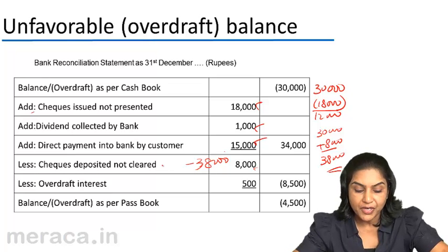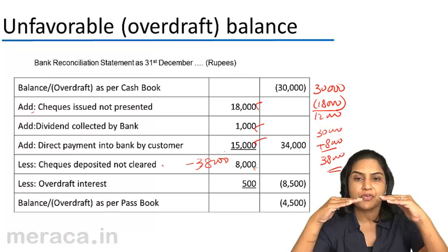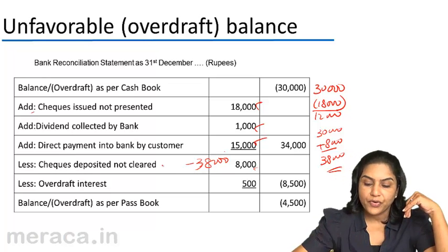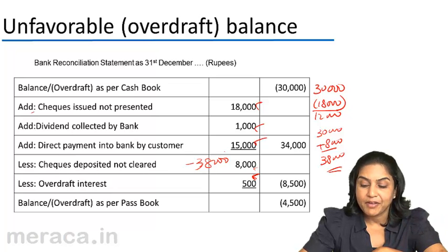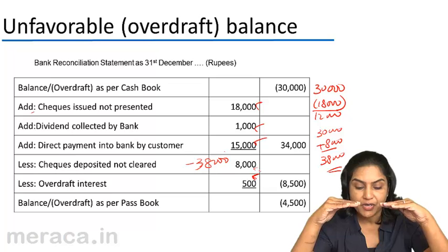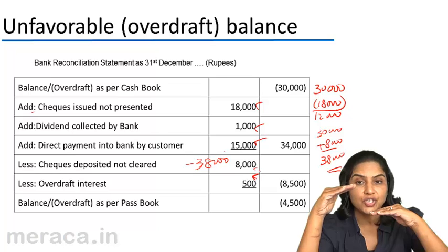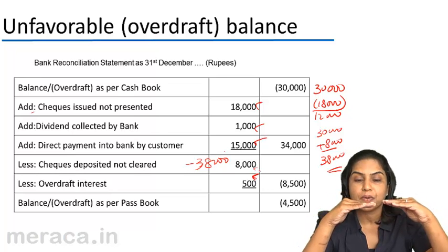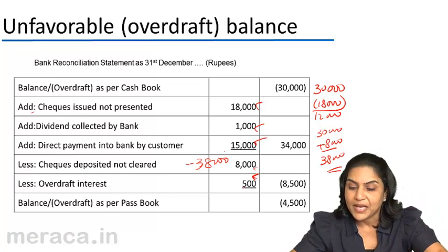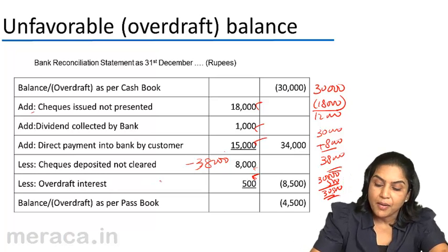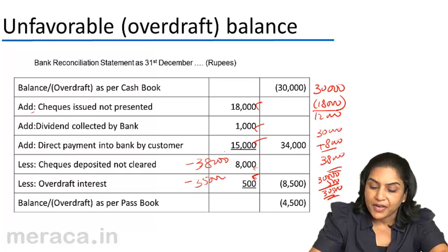Overdraft interest charged by the bank: if it were a favorable balance, the passbook balance would come down. Starting from the cash book, we would deduct — so overdraft interest is deducted by 500. From the overdraft point of view: overdraft interest charged means the passbook overdraft is increased because it's a charge. From cash book to passbook we would add — so 30,000 plus 500 means overdraft has become 30,500.